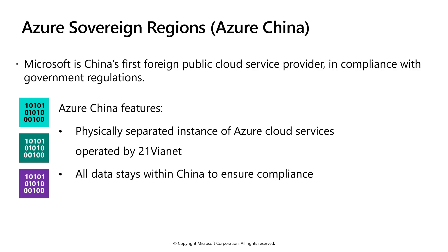Outside of the United States, Microsoft operates additional sovereign cloud offerings to meet geographic and governmental regulations of various countries, such as Germany or China. Azure China is one such foreign sovereign cloud, operated in conjunction with 21Vianet, as a physically separated instance of Azure. All data on Azure China stays within China to ensure compliance.